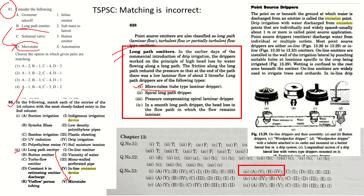Moving on — micro tubes are one option. The next option is button emitters, which may be your online emitters. Button emitters are point source emitters — these are online drippers or button drippers. The correct matching for button emitters should be inline emission devices. TSPSC may have taken this matching from a source but due to confusion or some other reason they mismatched the relation. You may challenge this question and get the marks.